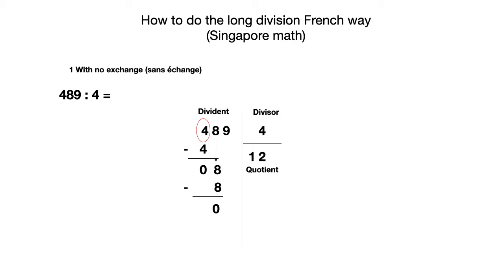The last and third step: slide down 9 next to the 0. You look for how many times 4 goes into 9 — it's 2. So 2 times 4 is 8, and 9 minus 8 is 1. So 1 is your remainder.